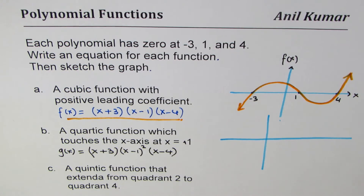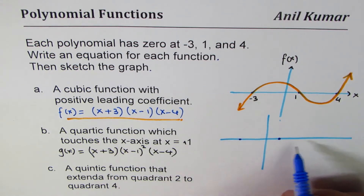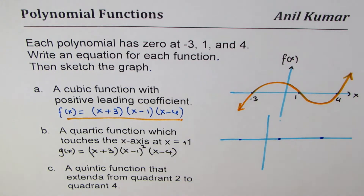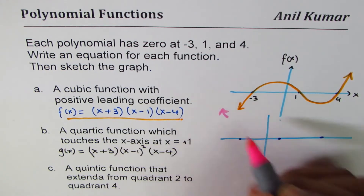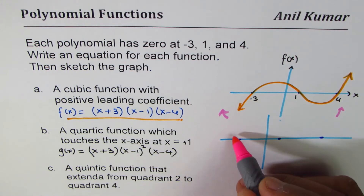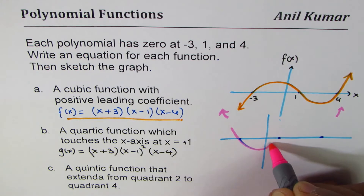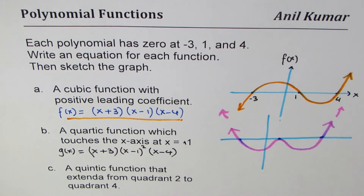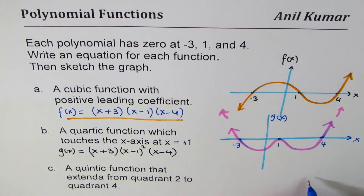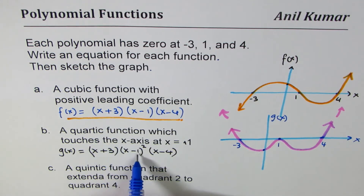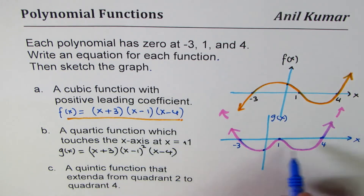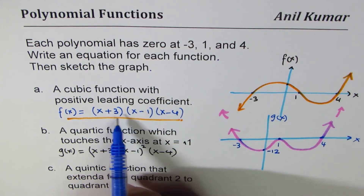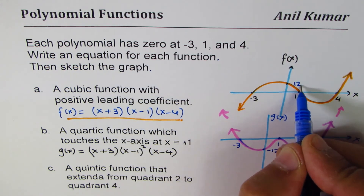Let me sketch g of x. We have a zero at minus 3, a double zero at 1, and a zero at 4. Since it's quartic, both ends face the same side with a positive leading coefficient. The graph comes up, and since at 1 we have two zeros it turns — you can see that — and then continues like this. That is g of x. The y-intercept: if we put x equals 0, we get 3 times 1 squared times minus 4, which gives 3 times 1 times minus 4 equals minus 12. In the previous cubic case, multiplying 3, minus 1, and minus 4 gives plus 12.